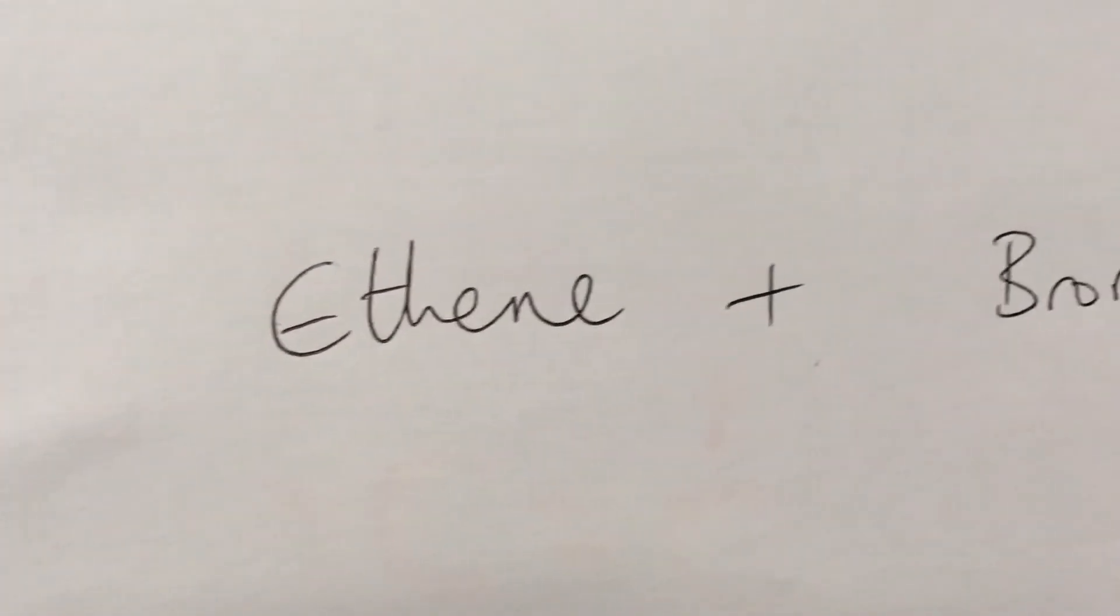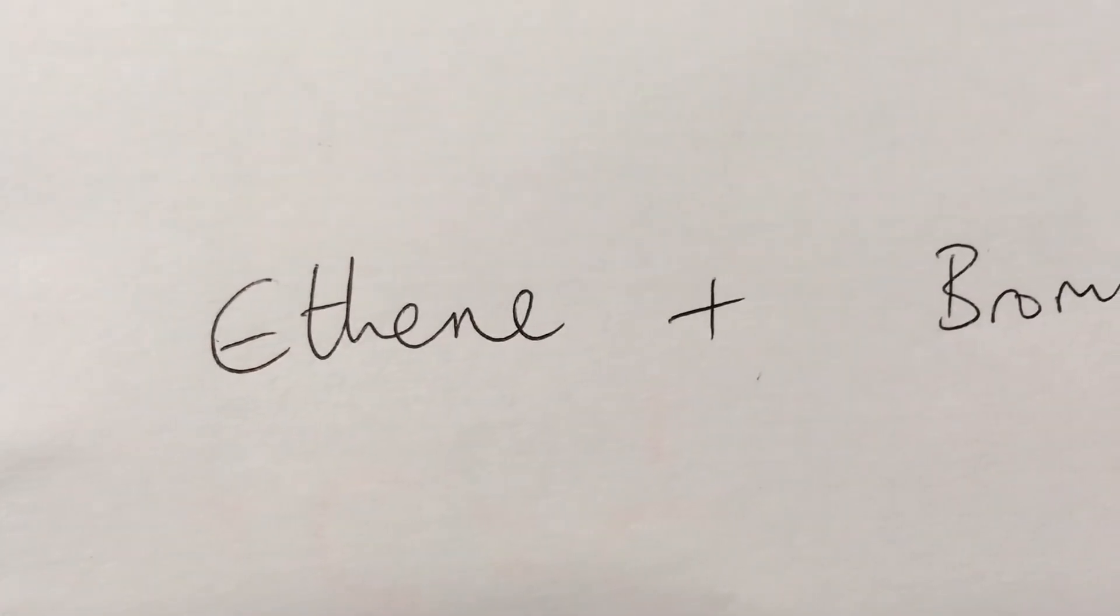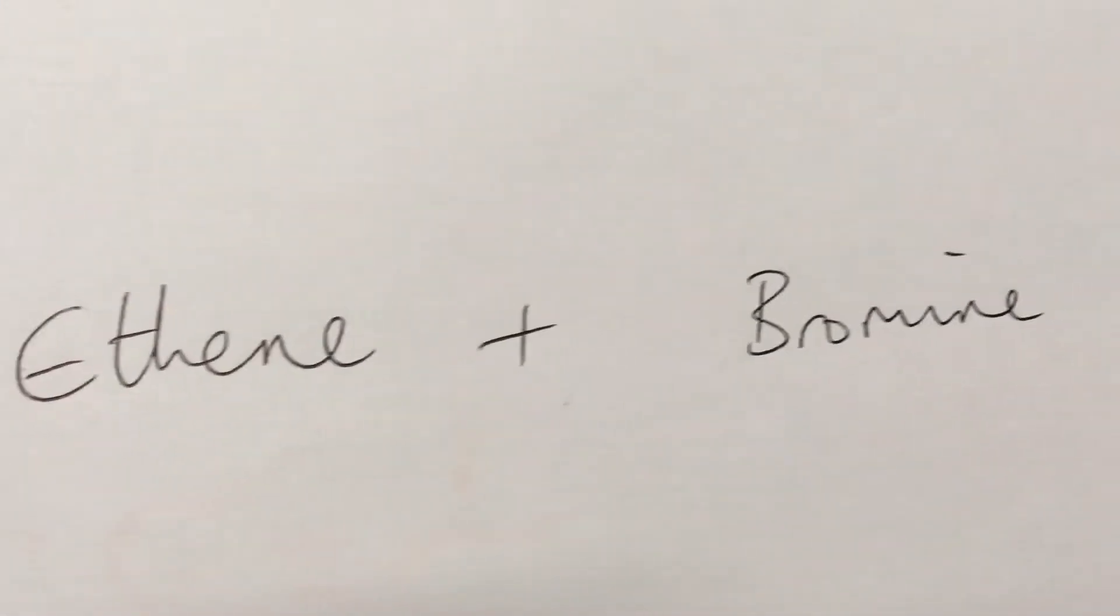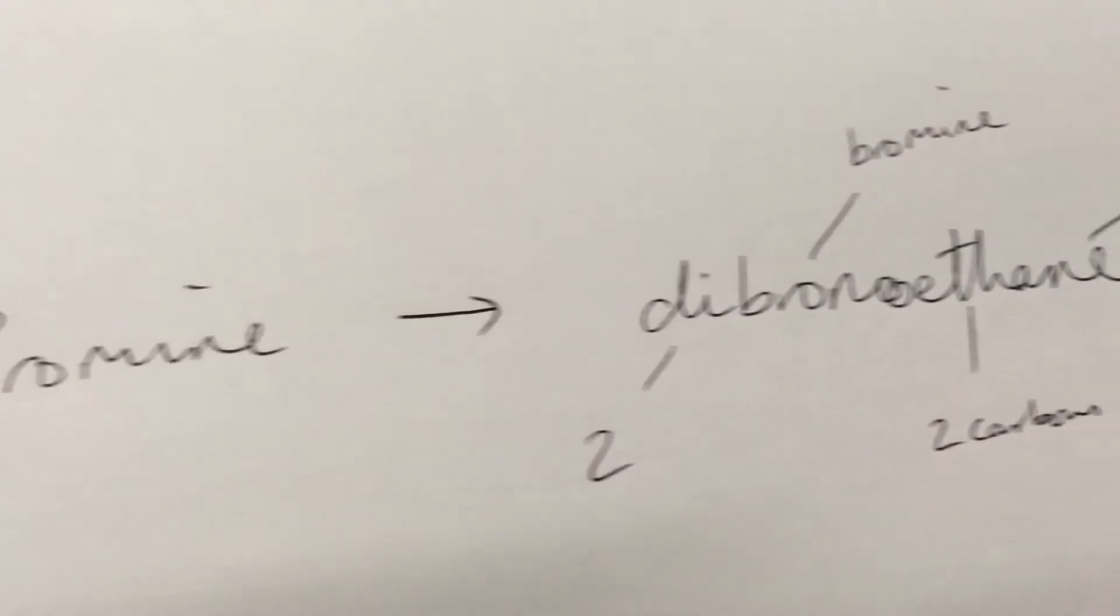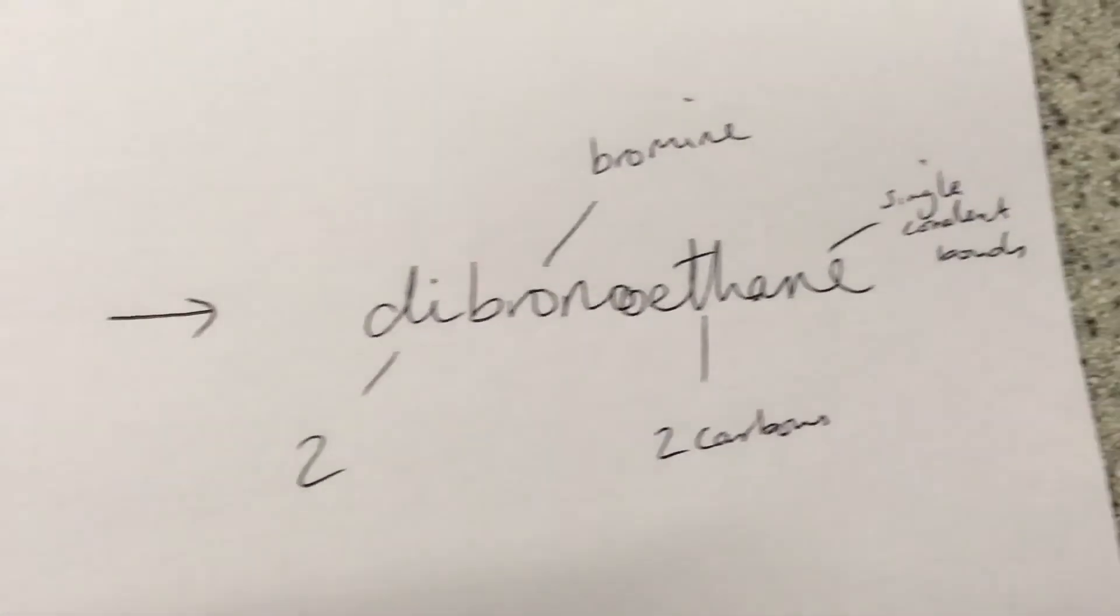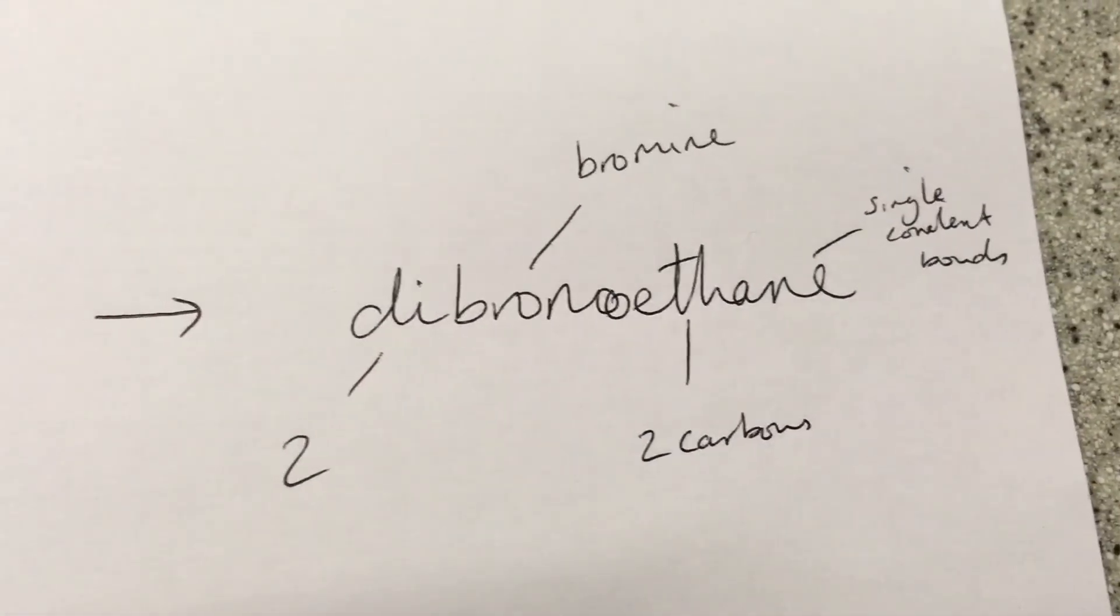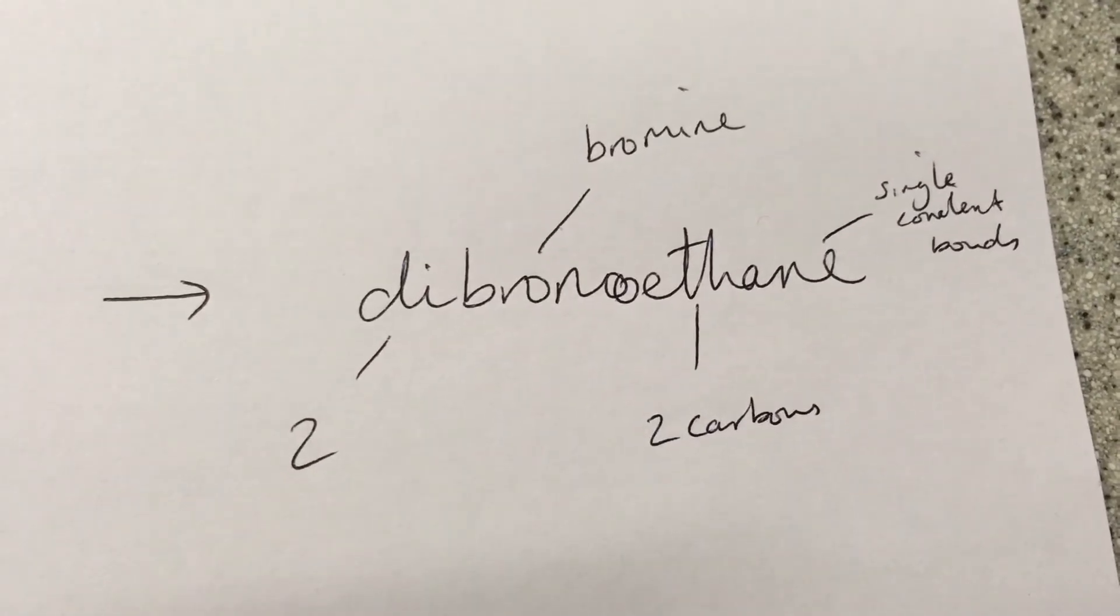My example for the word equation is using ethene rather than hexene. It's a bit easier. Ethene plus bromine gets me dibromo ethane. That's an addition reaction. Di meaning two, bromo to represent bromine, eth because it's two carbons.